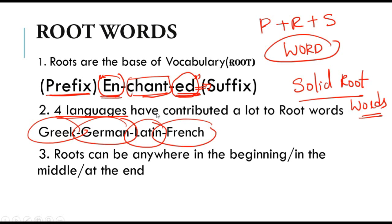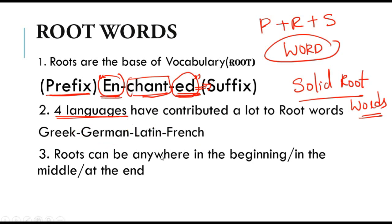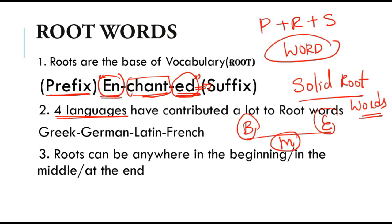The last thing you need to know is that root words can appear anywhere in a word — at the beginning, in the middle, or at the end. The position of the root word does not change its significance. If there is a root, it is going to help us find out — or at least guess — the meaning of the word. So these are the three things to know about root words. Now let's get started with the roots directly.